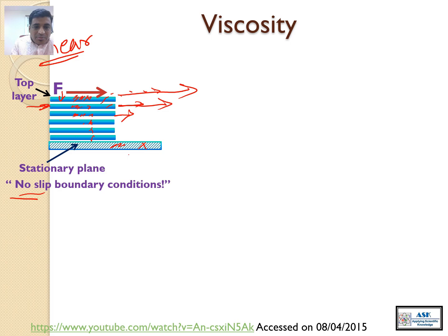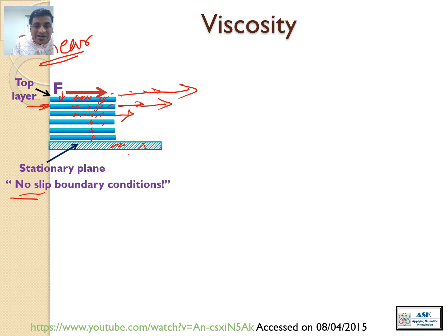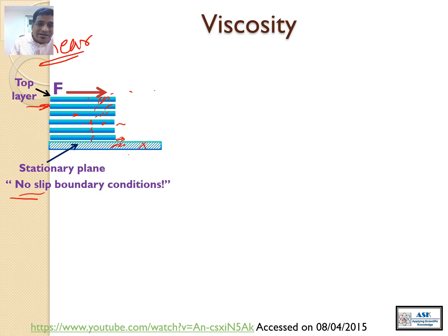The first layer absorbs certain shear stress. The second absorbs the remaining stress it experiences. The third absorbs what remains after the first and second layers. The fourth gets whatever remains after absorption by the first, second, and third layers. So deflection will be less because force will be less, and so on. At the very first layer from the bottom, it will have very little deflection, and the stationary plane will not move at all — as we assumed. So we get a certain velocity profile.